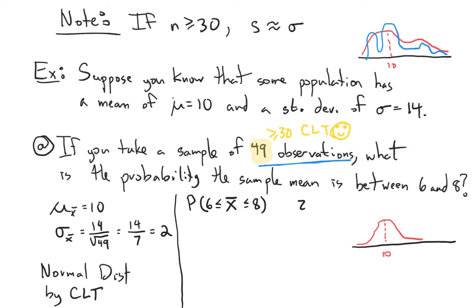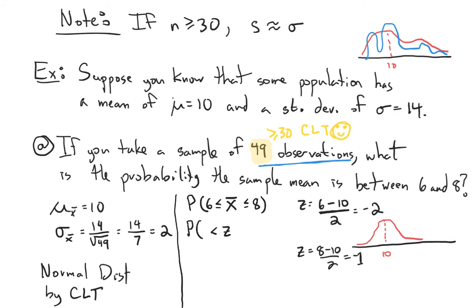For 6, we have z = (6 minus the mean 10) over our standard error 2. That's negative 4 divided by 2, which is negative 2 — or 2 standard errors below the mean. Similarly, for 8, z = (8 − 10) / 2 = −1, so 8 is 1 standard error below the mean with a z-score of negative 1. We're looking for the probability that z is between negative 2 and negative 1.